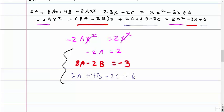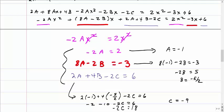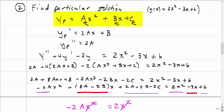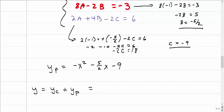From the first equation, a = -1. Using that in the second equation, b = -5/2. I do warn you that you'll get some nasty-looking fractions with this method, but we can handle them. Using a and b in the third equation, c = -9. So my particular solution is y_p = -x² - (5/2)x - 9. My full solution is the complementary solution plus the particular solution, added together.